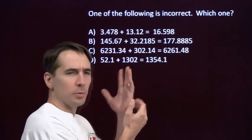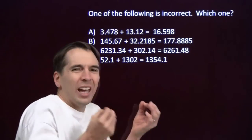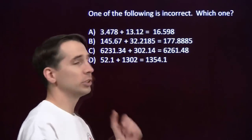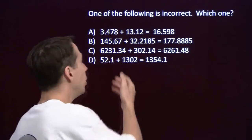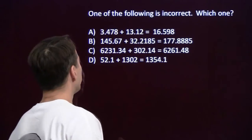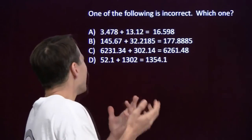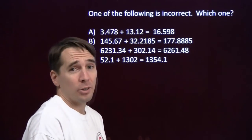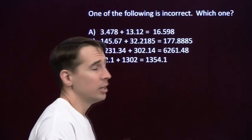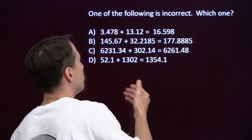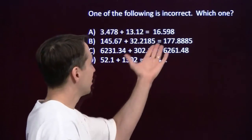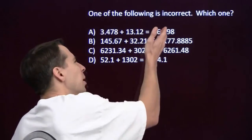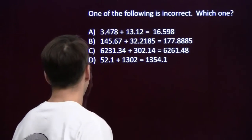We'll start off with some addition problems. What I do is I estimate. I'm adding 3.478 to 13.12. 3.478 is around 3.5, and 13.12 is around 13.1. So their sum should be around 16.6. Sure enough, that's what my calculator gave me — probably right on that one.